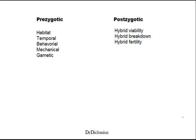Reproductive barriers. There are pretty much two basic types of reproductive barriers. Those fall into the categories of prezygotic or postzygotic. Zygotic meaning like a zygote — meaning like a fertilized egg. So prezygotic will be before the egg is fertilized, and postzygotic will be after the egg is fertilized.